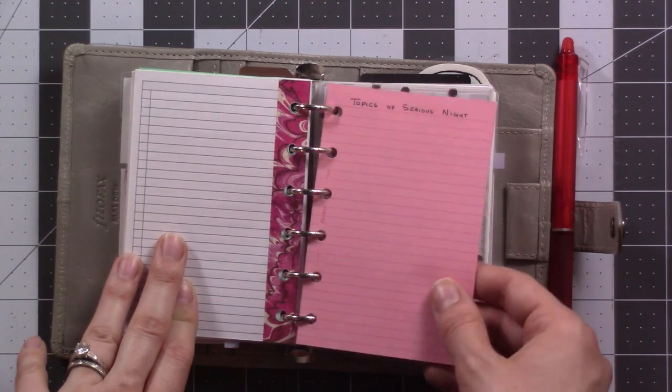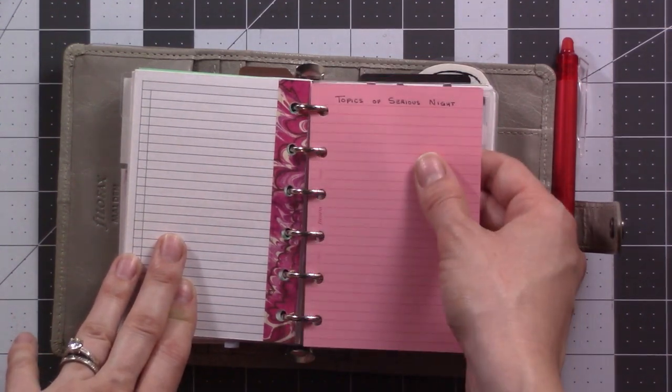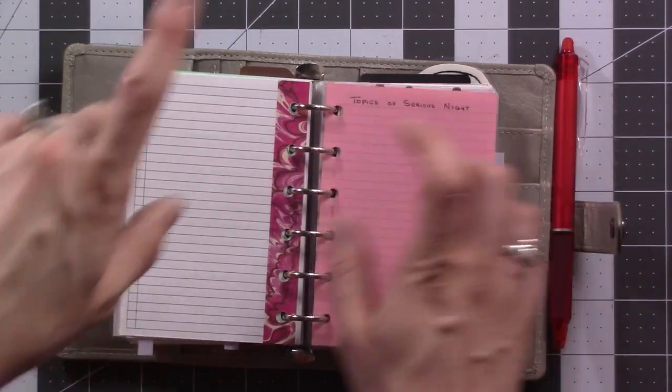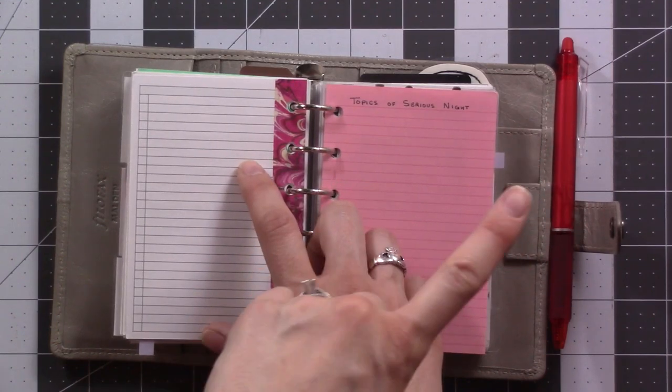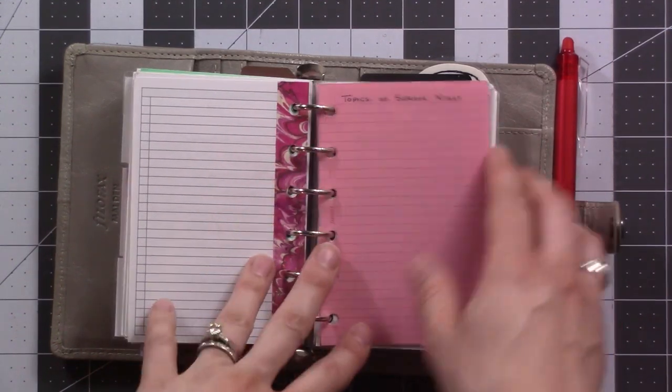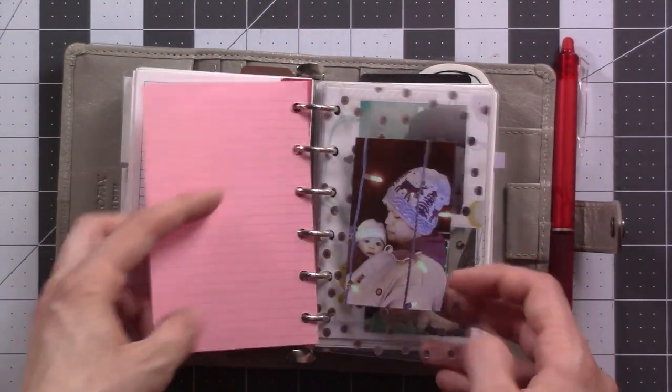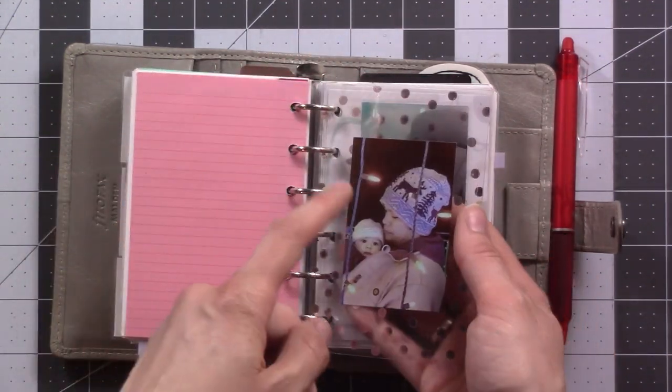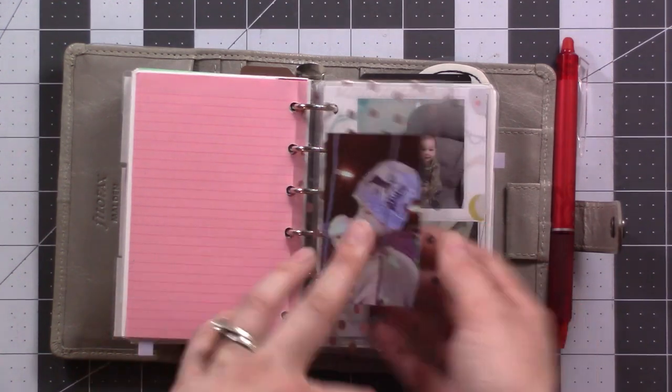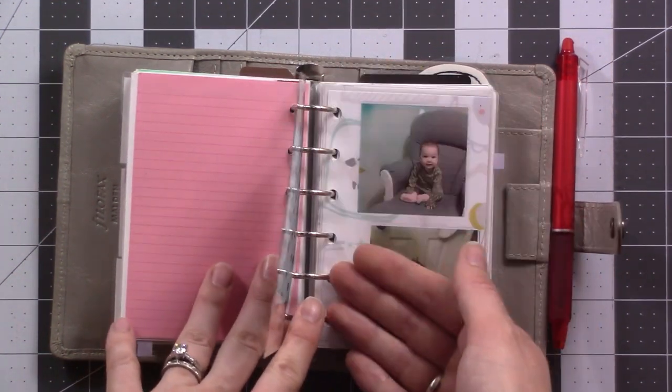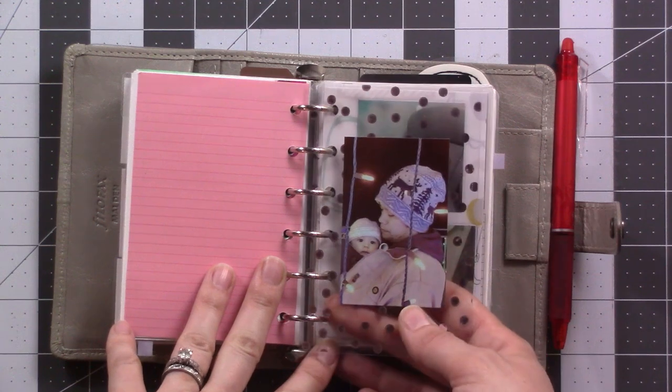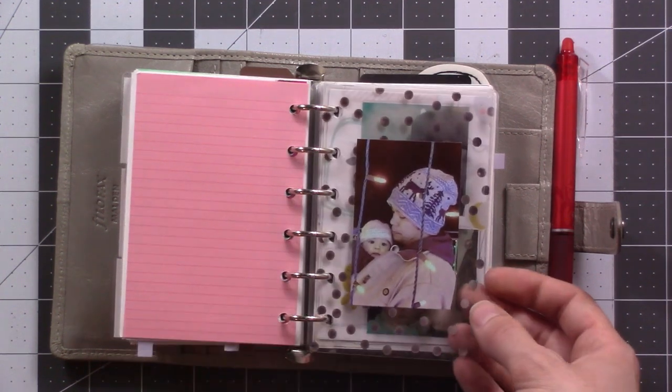Then I also did the same with this, but I haven't used it yet. This is the Topics of Serious Night spread, which I did a video about on Valentine's Day. You can see that here. I kind of talked about what this is for. Then this little divider picture here was denoting the section of inserts for the baby, but I wasn't really using them. So I took them out and this is still just here.